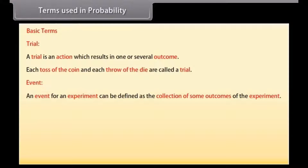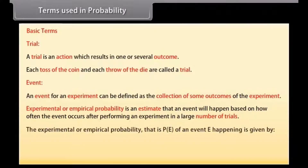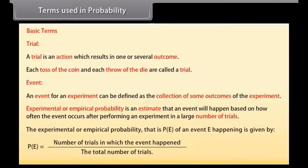Experimental or empirical probability is an estimate that an event will happen, based on how often the event occurs after performing an experiment in a large number of trials. The experimental or empirical probability P(E) of an event E is given by: P(E) = number of trials in which the event happened, upon the total number of trials.